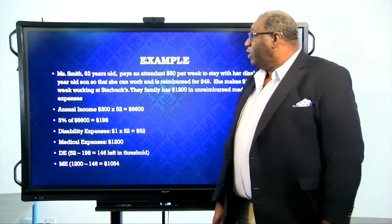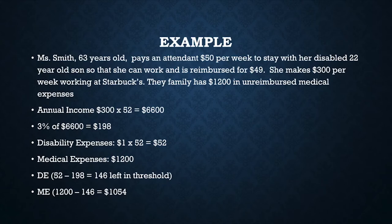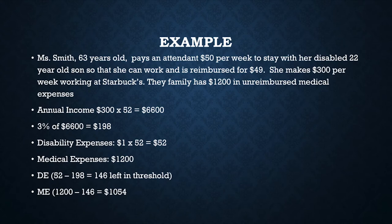In our next example, Ms. Smith, who's 63 years old, pays an attendant $50 a week to stay with her disabled 22-year-old son so that she can work. These expenses are reimbursed at $49. She makes $300 a week working at Starbucks. The family has $1,200 in unreimbursed medical expenses. So in this example, we have both medical and disability assistance expense. First, let's get her annual income — it is $6,600. Let's take the 3% threshold for that, which is going to be $198.